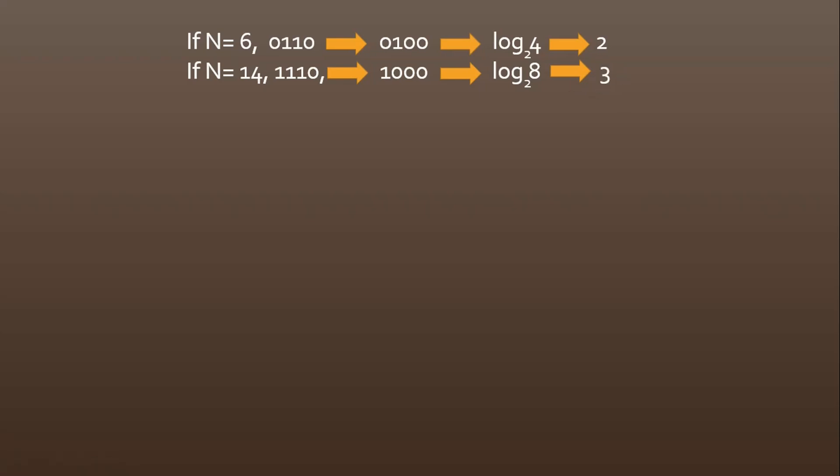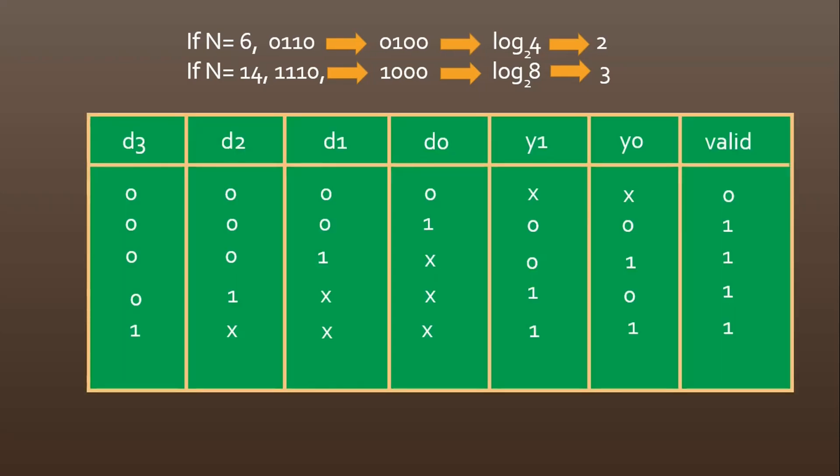Friends, let me write the same behavior with the help of a truth table. Let us consider the case when d3 is high. For d2, d1, d0, I am writing don't care because whatever number I write, when d3 is high, I am going to make them 0 to get the 2^m number. This number is 8. So my output will be 11, which is 3. This is what I considered in this example also.